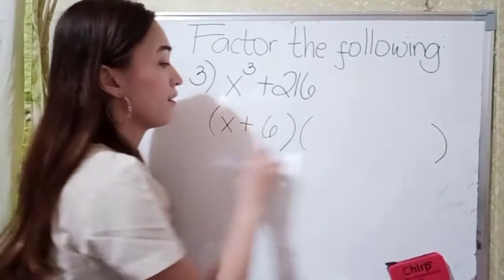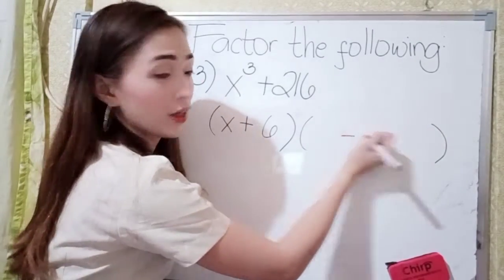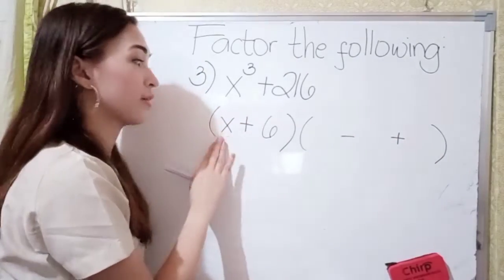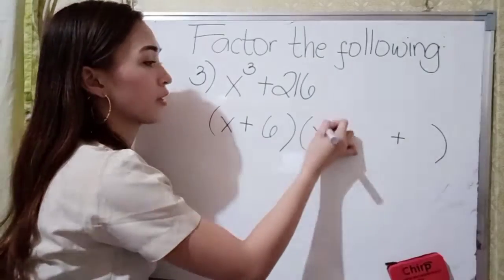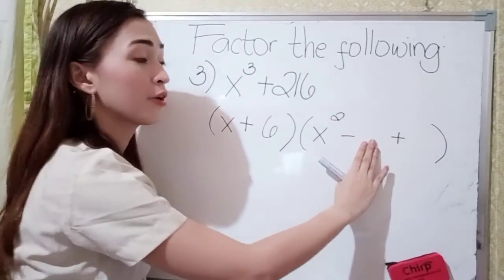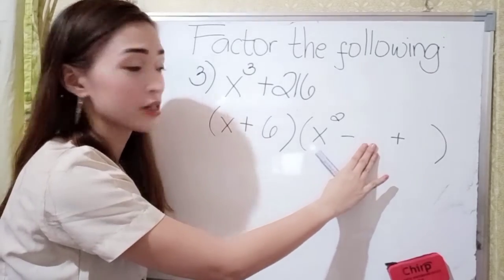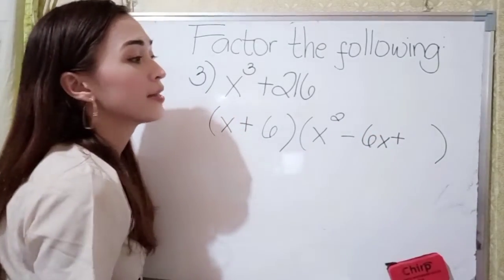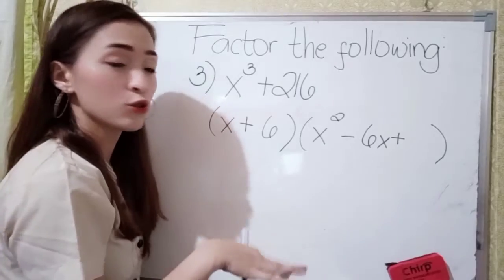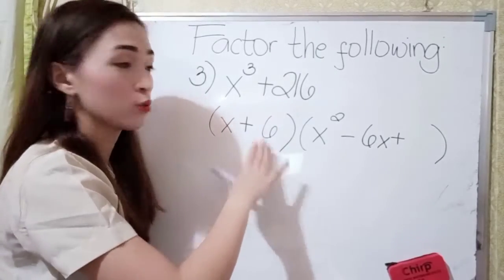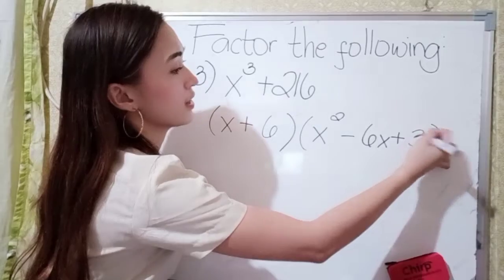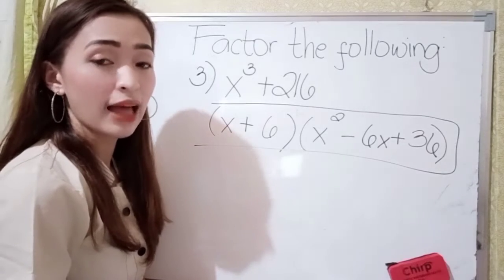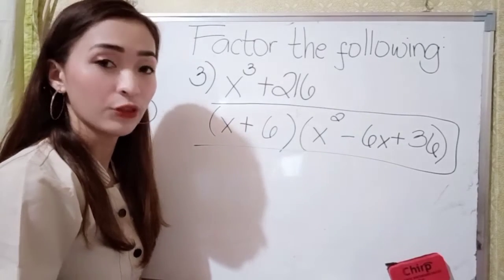If this is plus, so put a negative sign here, and then in our last term that is positive. For our first term, square the first term — x times x is x squared. For our middle term, just multiply the first and last term. So, x times 6, we have 6x. For our last term, square the last term — 6 times 6 is 36. Our final answer is x plus 6 times x squared minus 6x plus 36.